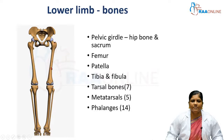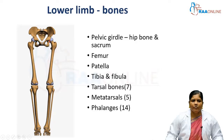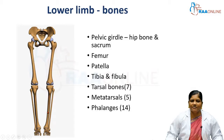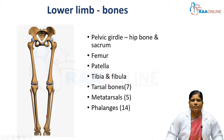In the thigh region we can see a large heavy bone called the femur, so the thigh region is also called the femoral region. The femur articulates with the hip bone at an area called the acetabulum, forming the hip joint. The lower end of the femur articulates with the leg bones — the medial heavy bone is the tibia and laterally is the fibula — forming the knee joint. In the anterior aspect of the knee joint there is a large sesamoid bone called the patella.